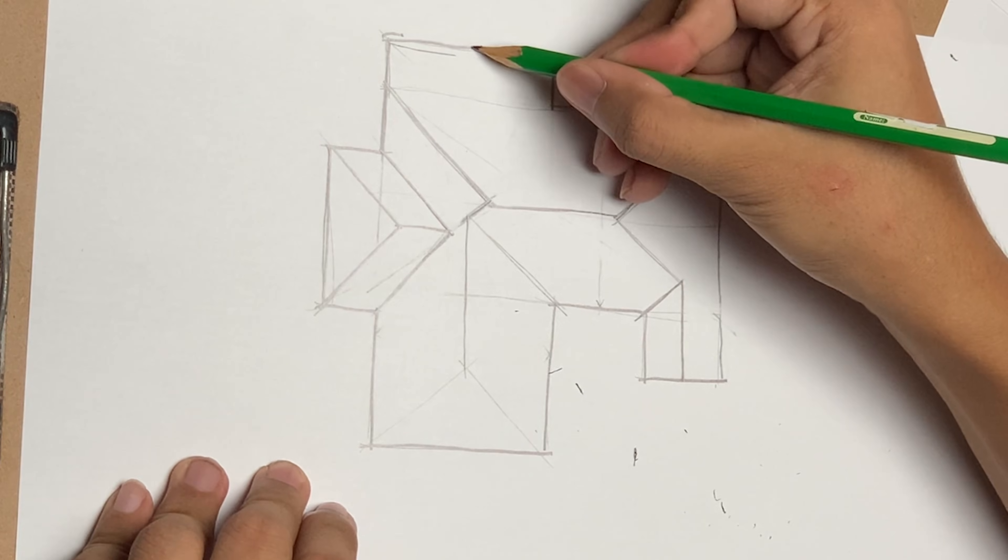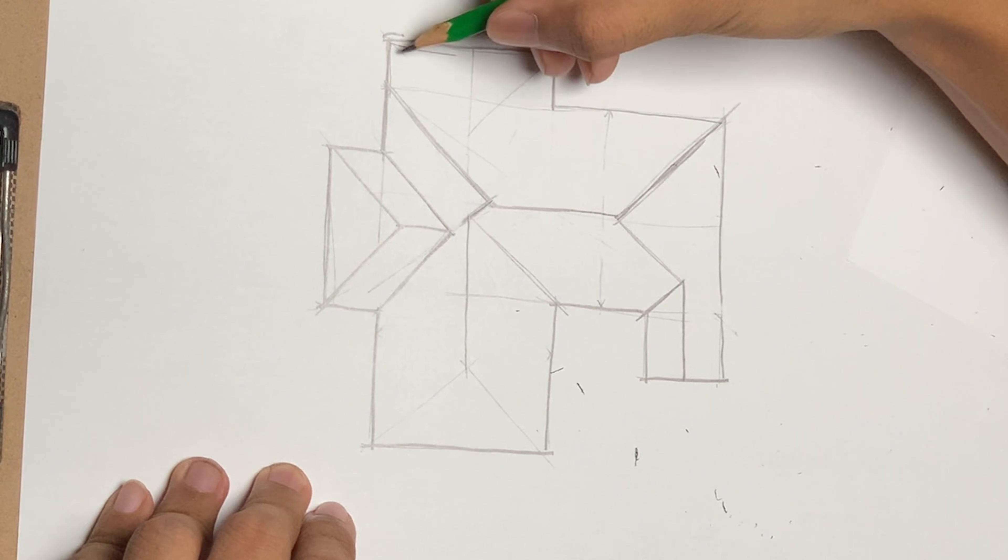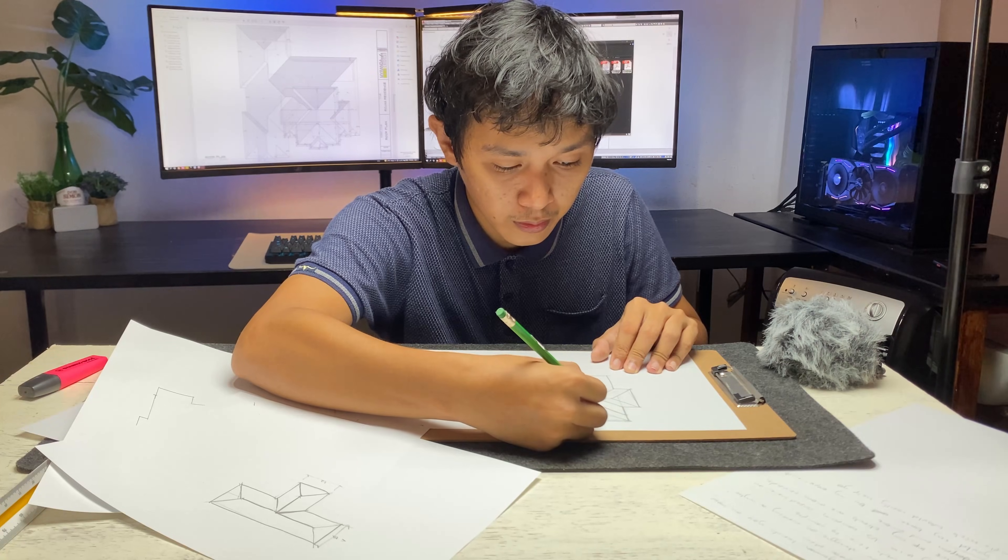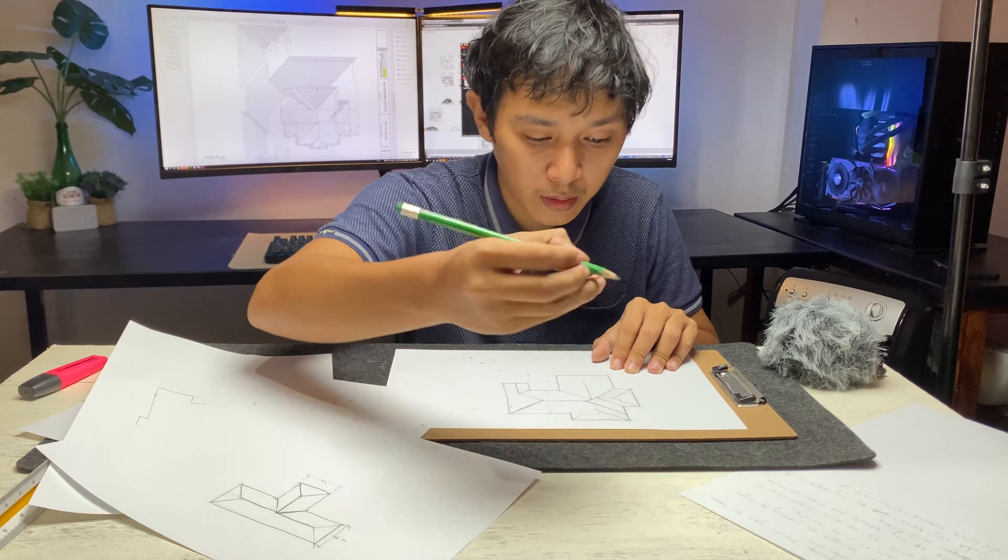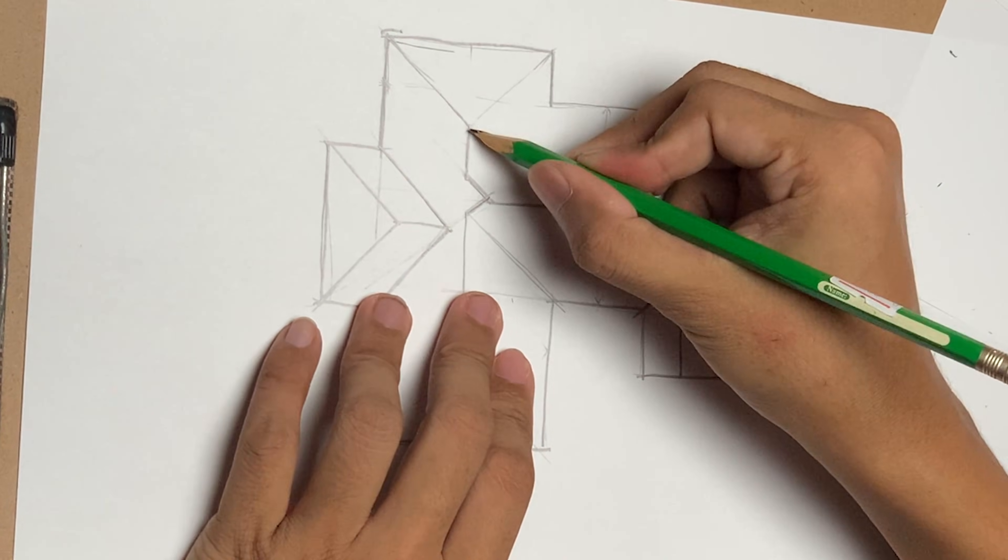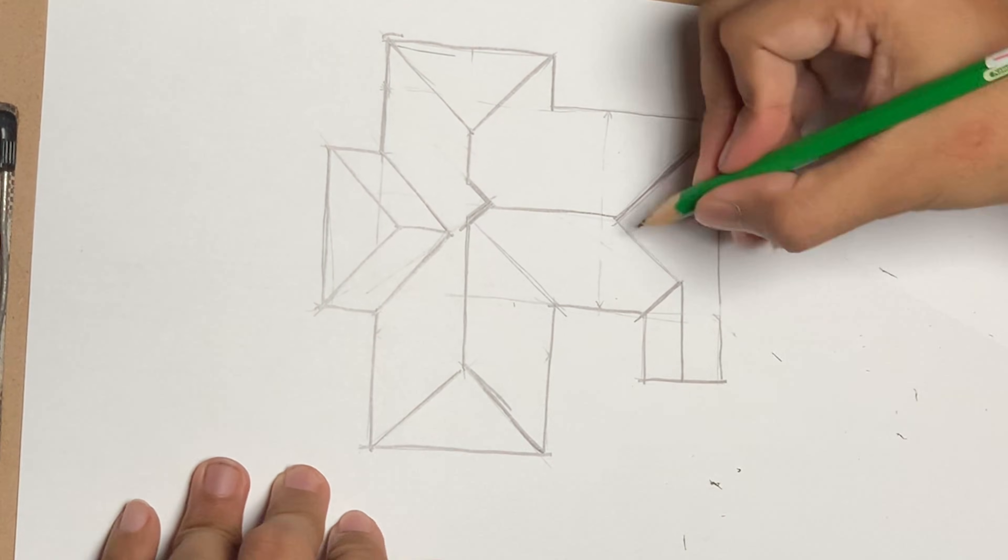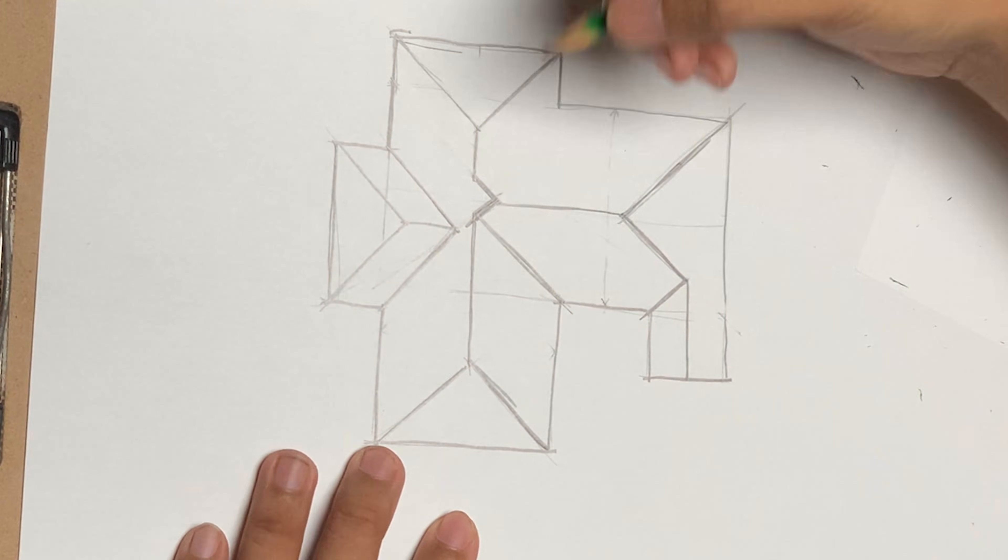Now we can do the back part, same thing. 45, 45, and meet those edges. That's all. I tried it different times and different methods, but this is the fastest, believe me.